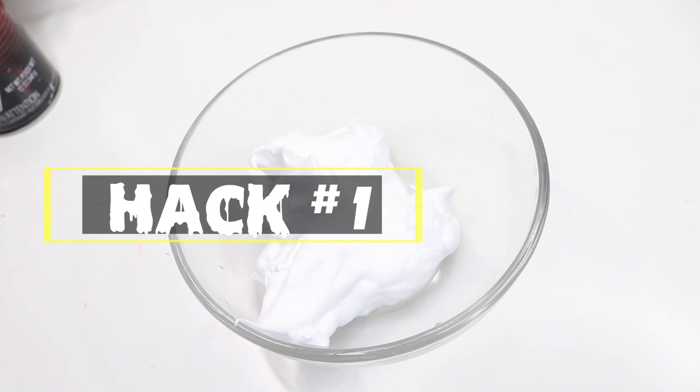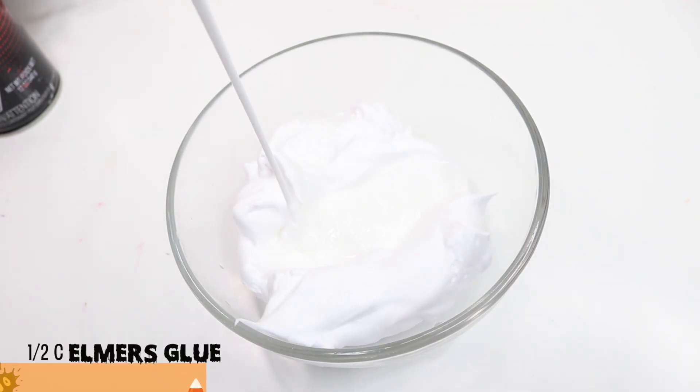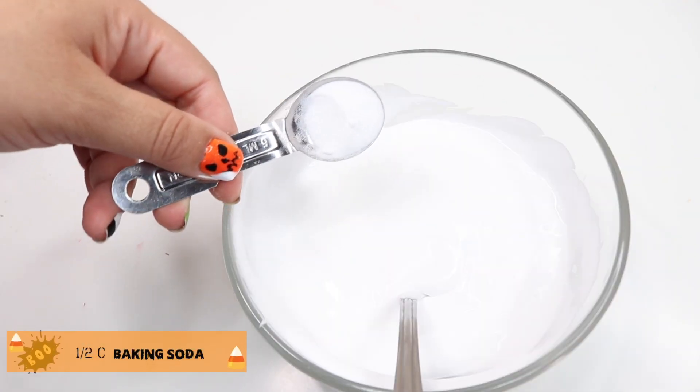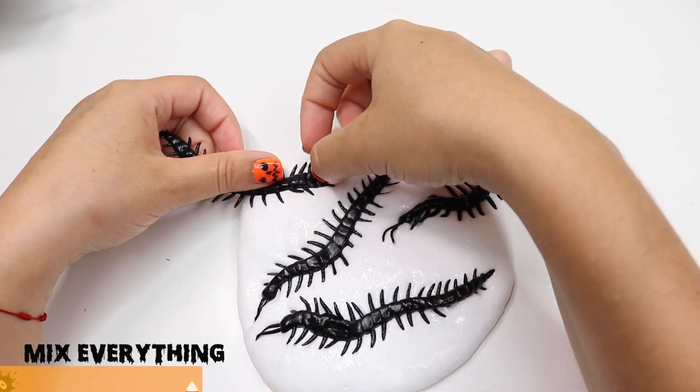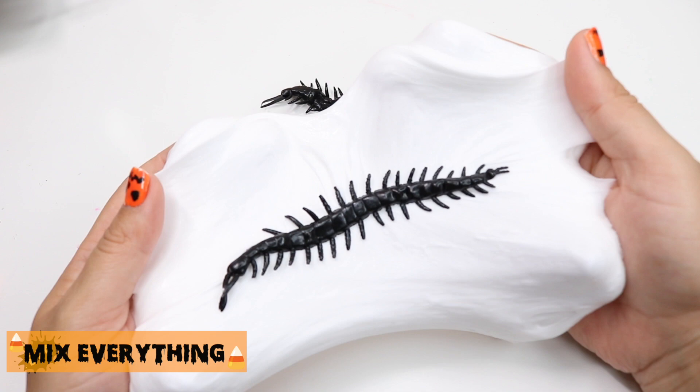For example, this finger - do you guys have any idea what this is? You have to stay tuned and watch this video to learn what this is. Okay guys, for hack number one you will be needing shaving cream, baking soda, Elmer's glue, contact solution. The list of all the ingredients I used will be listed down below.